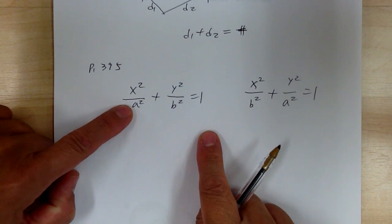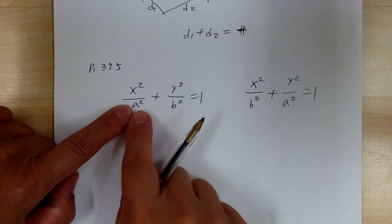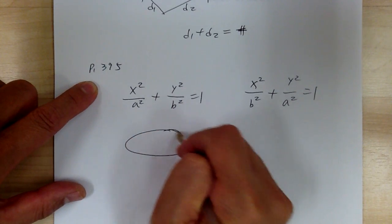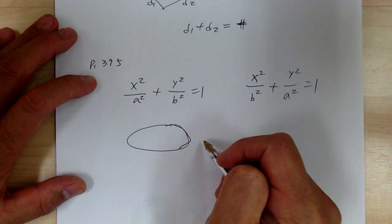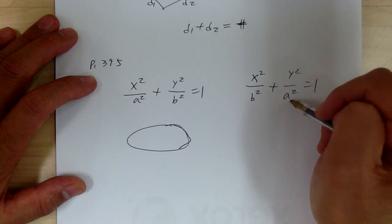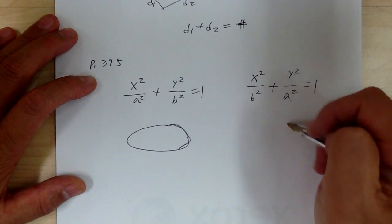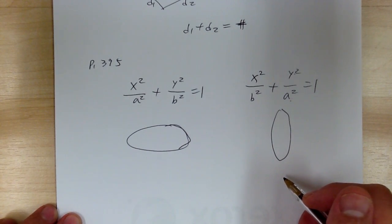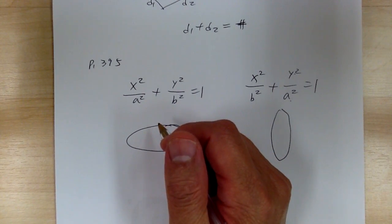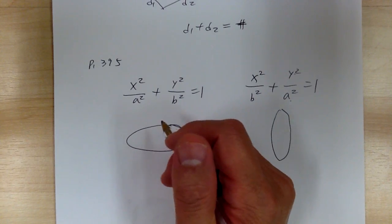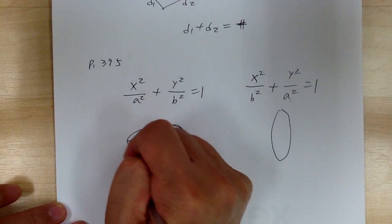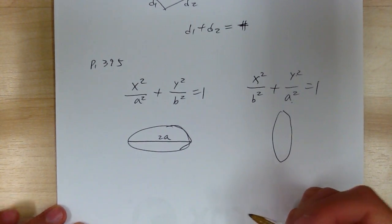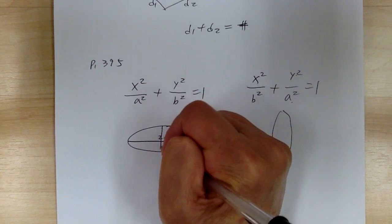Now a is always the bigger number. So if a is under the x, your graph is elongated horizontally like this. If a is under the y, your graph is elongated vertically. The a represents your major axis, so the full length across is 2a.